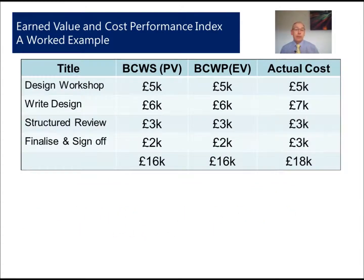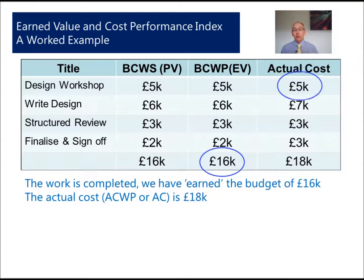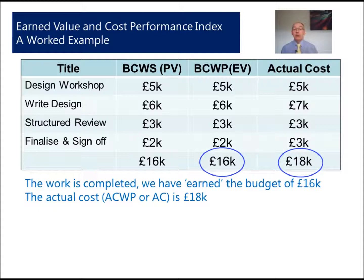Looking at the table: we've completed the design work. We have our budgeted cost of work scheduled — our planned value — we have our earned value, and as we complete the work we earn the budget. We've also looked at what our actual cost is. What we're interested in is how much it actually cost us to do that work, and the table shows it cost us eighteen thousand pounds, but we only had a budget of sixteen thousand pounds.